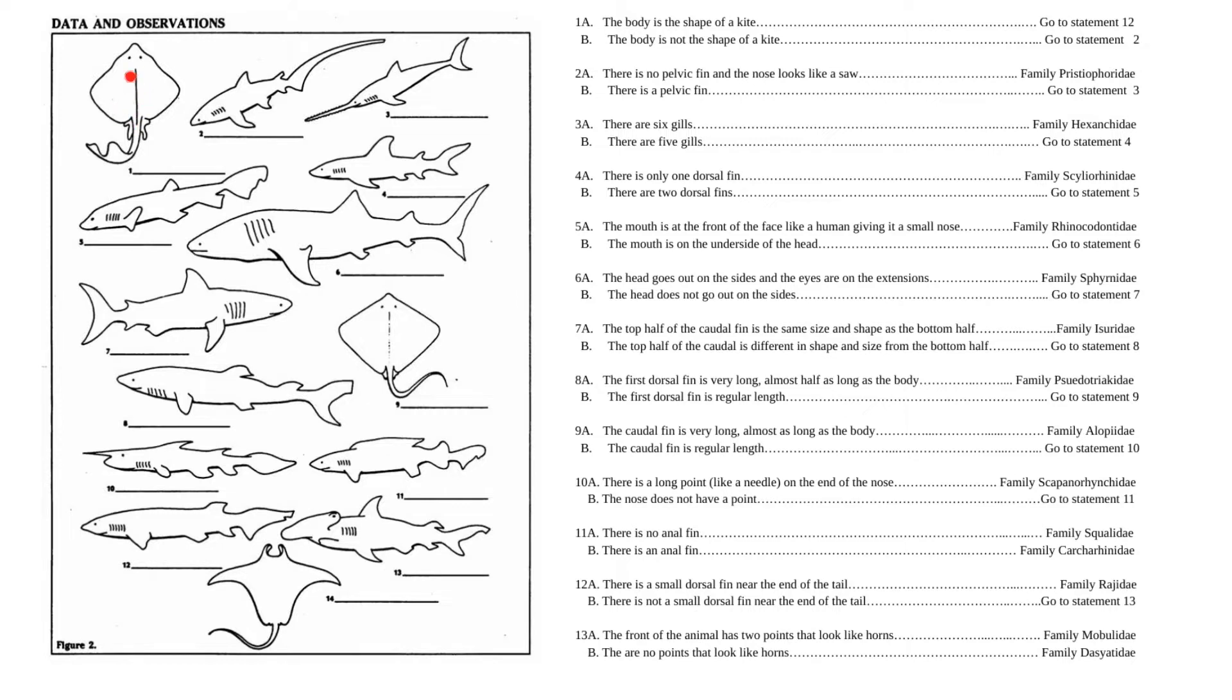So you start with the organism. This is the first one we're looking at, this number 1 here. And we pick out this animal and we use it along with the key to the right. So we always start with statement 1, statement 1a, I should say, which is the body is the shape of a kite. So if that's true, we would then go to statement 12. If that's not true, we would go to statement 2. But looking at fish number 1, its body shape is that of a kite. So we jump all the way down to statement 12.